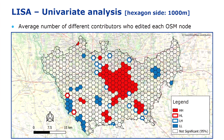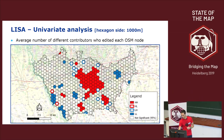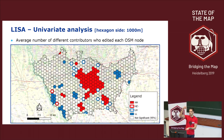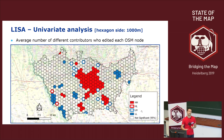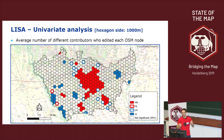Looking at the outliers: HL means a cell with a high value surrounded by low value cells — areas where the average number of contributors is particularly high. LH outliers are more interesting for the community: areas with a low average contributor count surrounded by areas where it is high — these may need some mapping attention. All other cells are not significant at a 5% significance level.